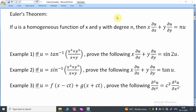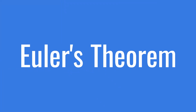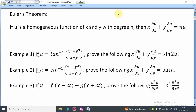Today we are going to solve examples on Euler's theorem. Euler's theorem states: if u is a homogeneous function of x and y with degree n, then x ∂u/∂x + y ∂u/∂y = n·u.